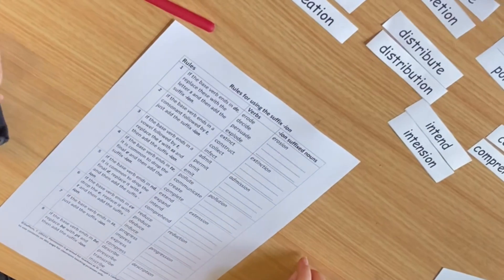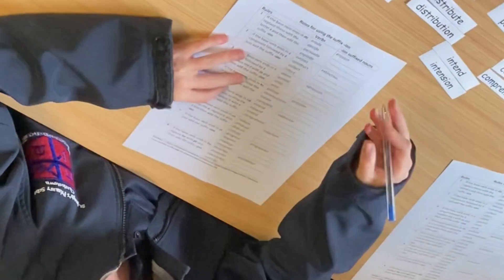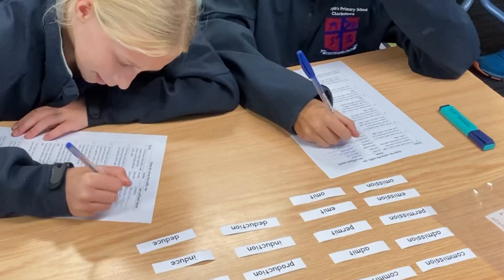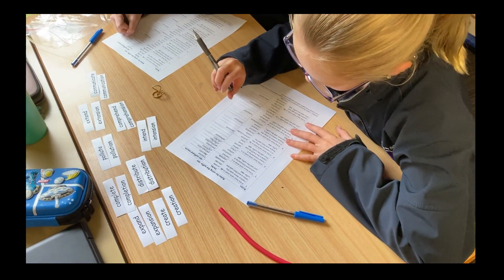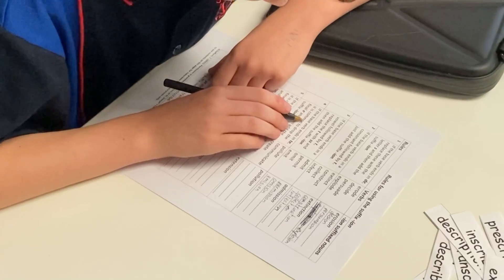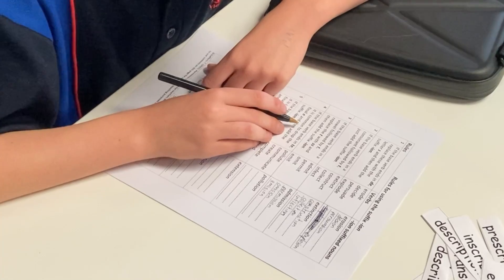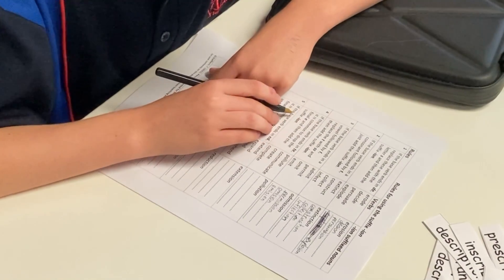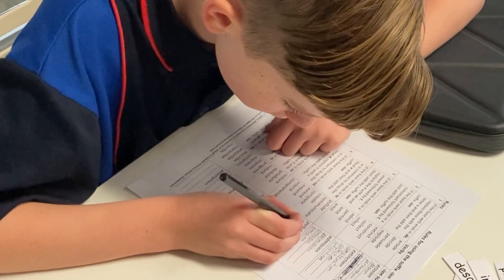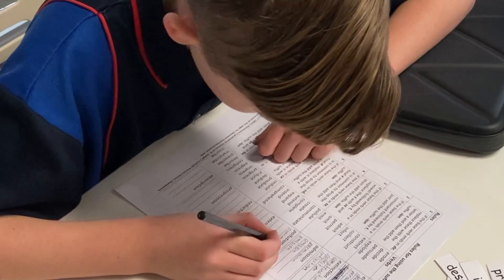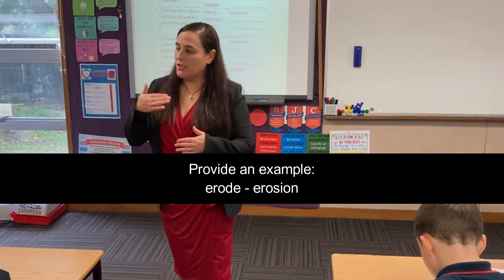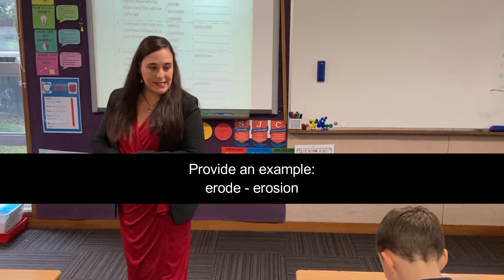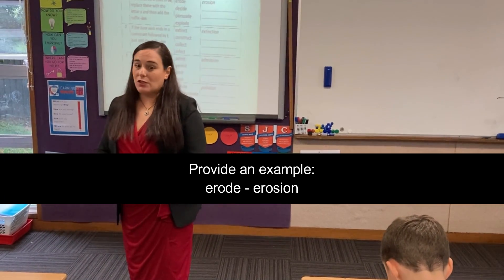You drop the E and you drop the D, and then you add S-I-O-N. The base verb ends in a vowel followed by T — replace the T with S-S and add the suffix I-O-N. For example: the soil will erode away — so 'erosion.' It could be: soil erosion occurs.